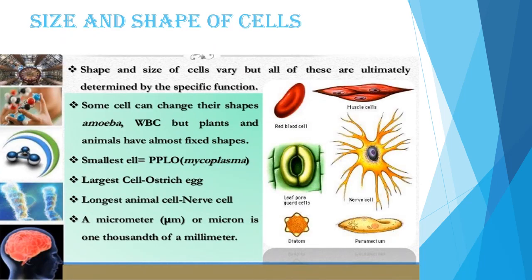Cells have different shapes and sizes, all ultimately determined by their specific function. Cells are so tiny they can only be seen through a microscope. The smallest cell is mycoplasma or PPLO, measuring 0.1 to 0.15 microns in diameter. The longest cells are nerve cells, measuring nearly 1 meter in length. The largest cells are ostrich eggs, visible to the naked eye, about 170 by 135 mm in diameter. Among plants, the single-celled alga acetabularia measures nearly 10 cm in length.